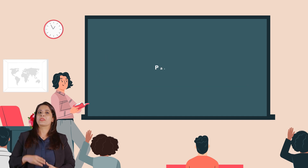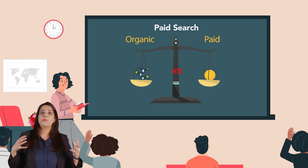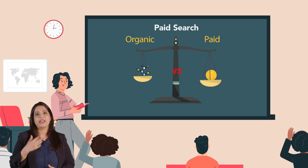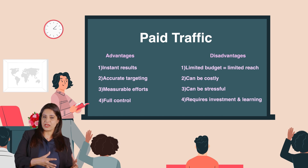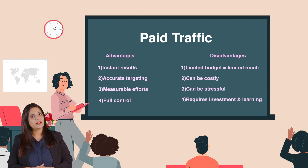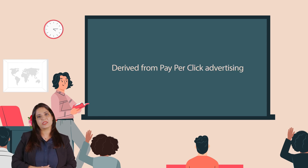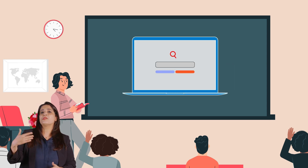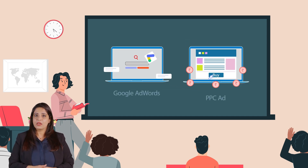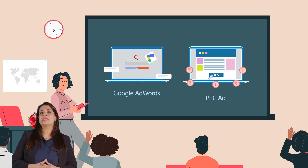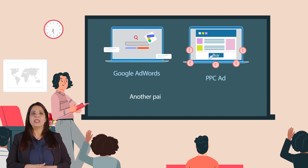Next we have paid search. Paid traffic is the polar opposite of organic traffic. Paid media is derived from pay-per-click advertising. It is the consequence of paid advertising using Google AdWords, a popular PPC ad management tool, or another paid search platform in which you pay a network every time your ad gets clicked.